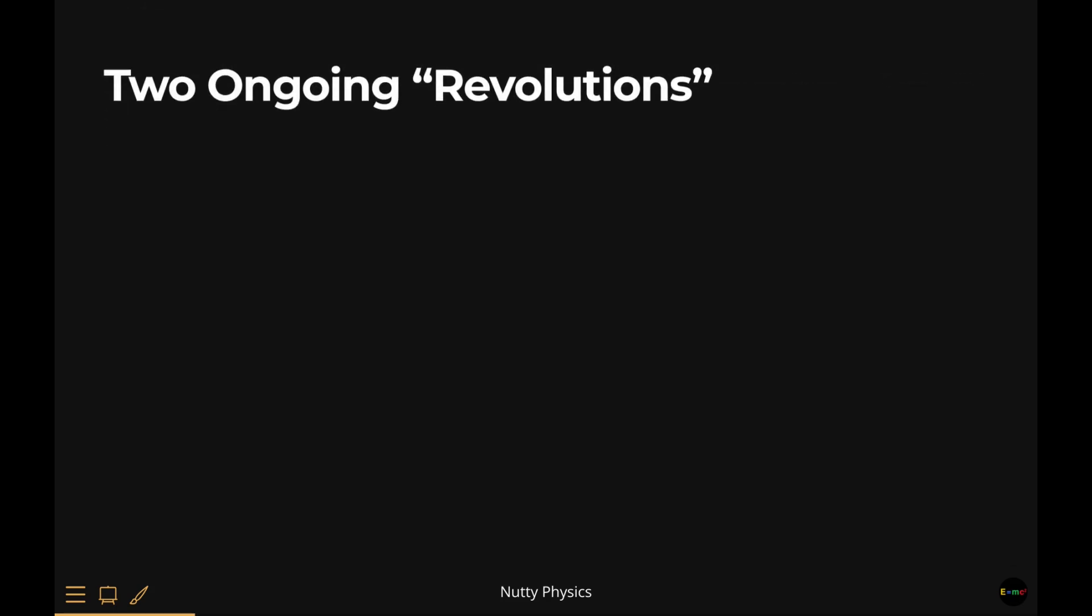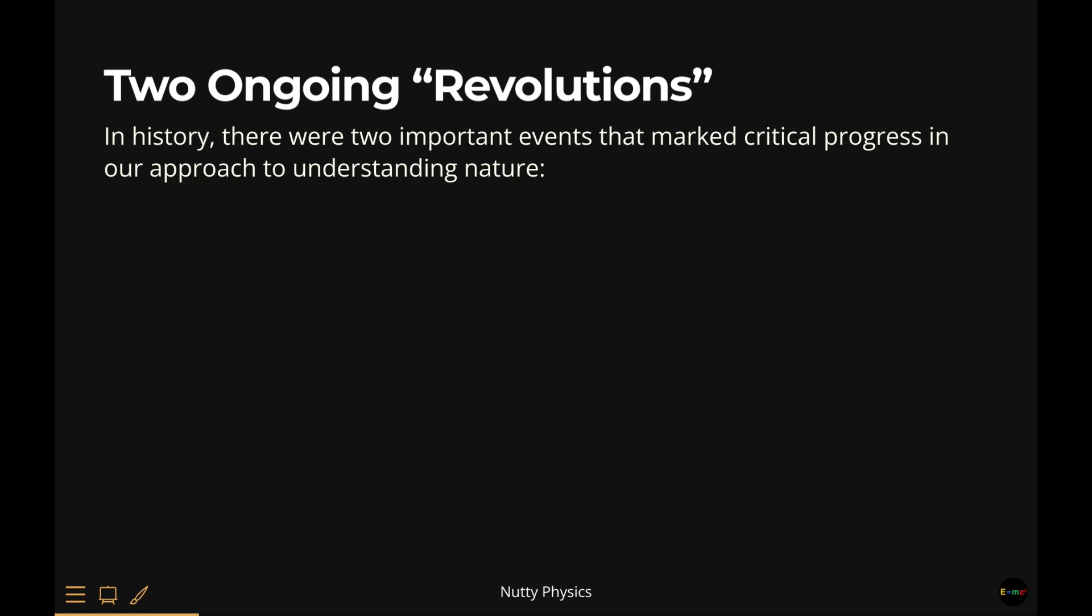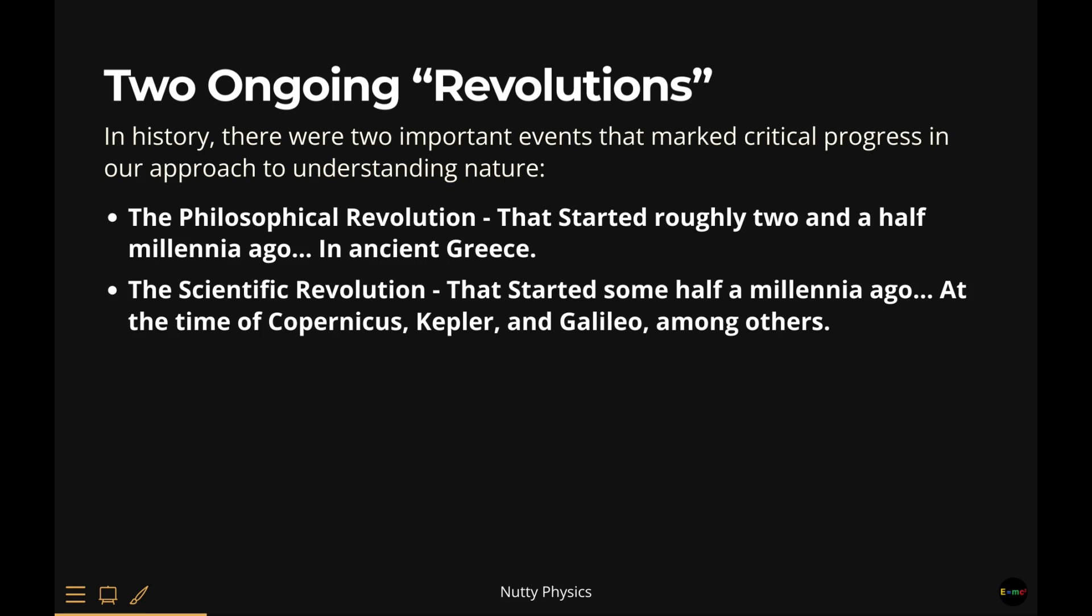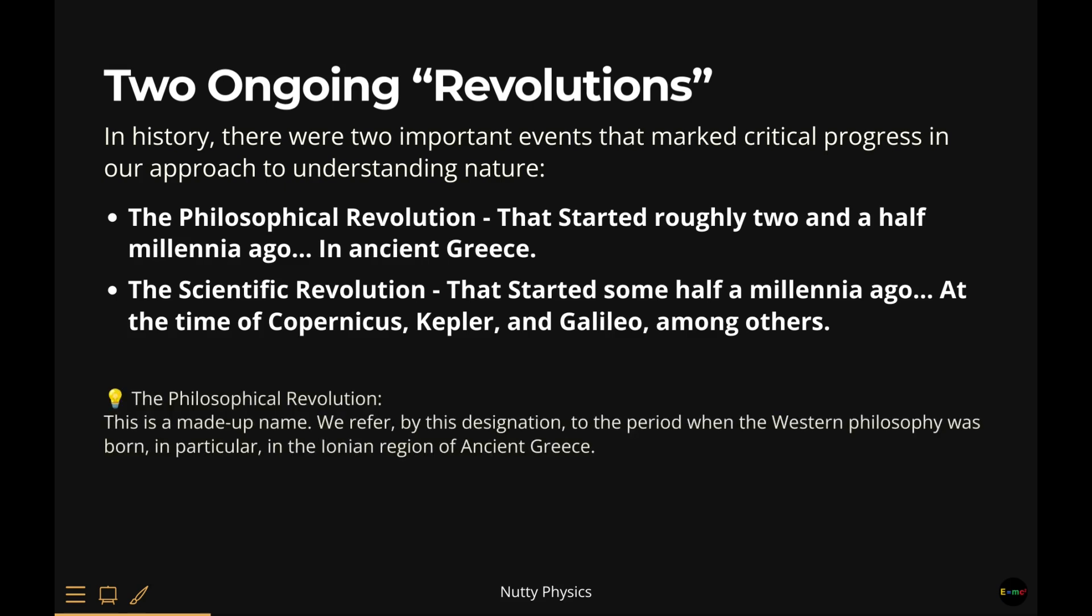Two Ongoing Revolutions. In history, there were two important events that marked critical progress in our approach to understanding nature. The Philosophical Revolution, that started roughly two and a half millennia ago in ancient Greece. The Scientific Revolution, that started some half a millennia ago, at the time of Copernicus, Kepler, and Galileo, among others. As for the name, the Philosophical Revolution, this is a made-up name. We refer by this designation to the period when the Western philosophy was born, in particular, in the Ionian region of ancient Greece.